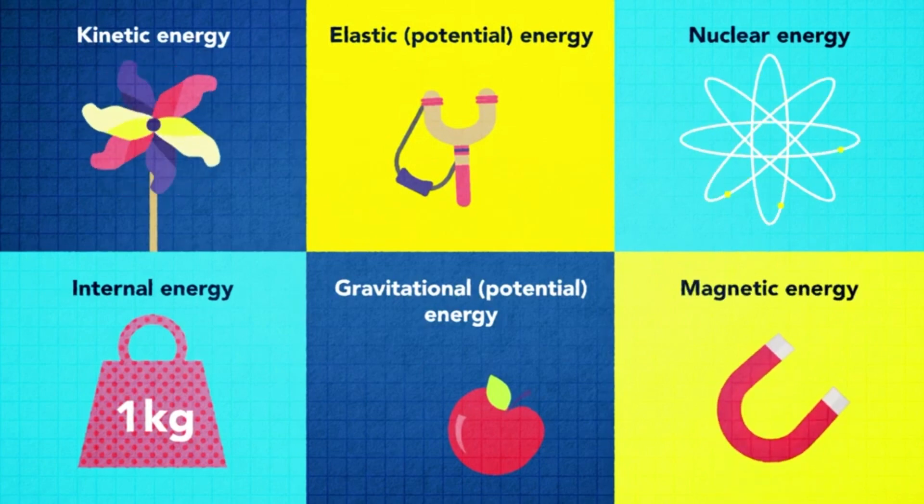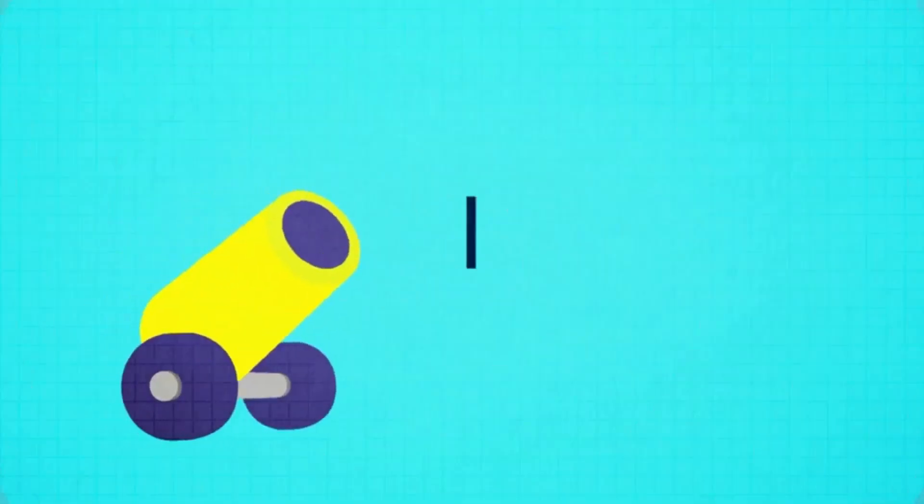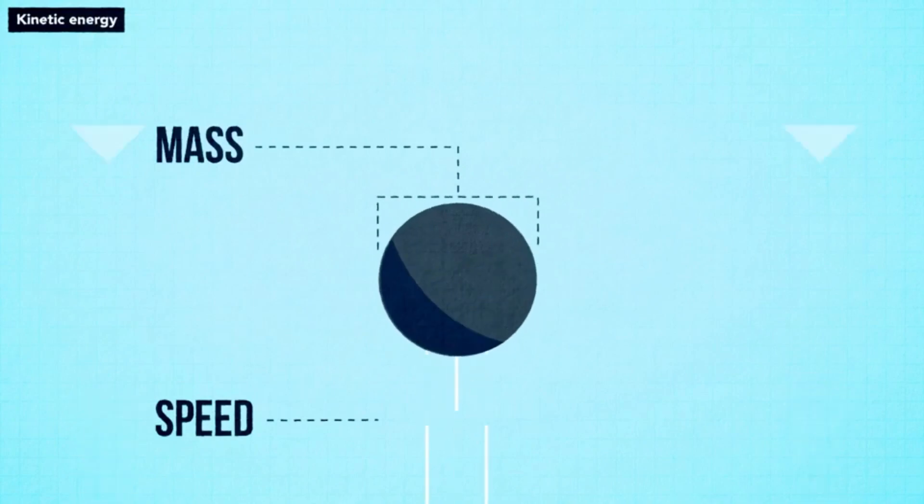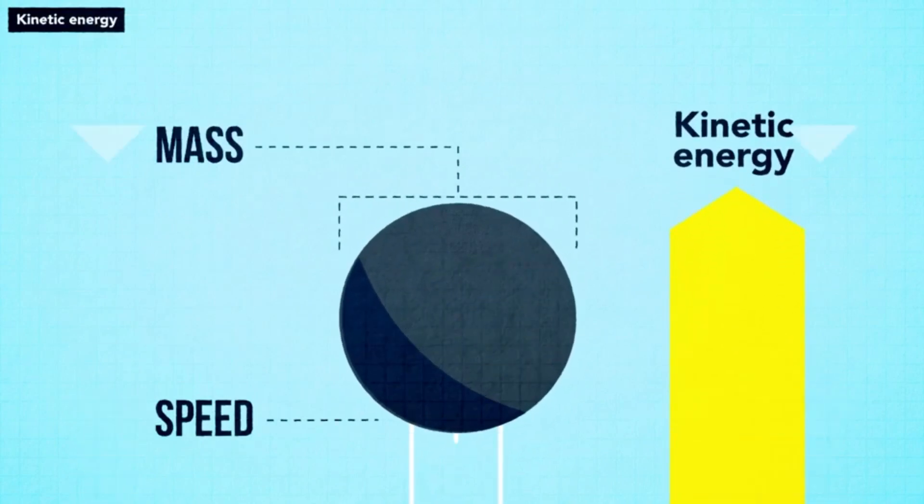Let's look at some of these in more detail. Moving objects have kinetic energy. The more mass and speed they have the more kinetic energy they have.